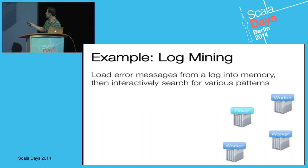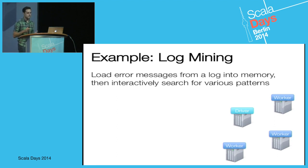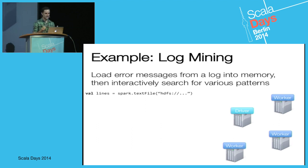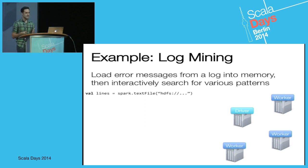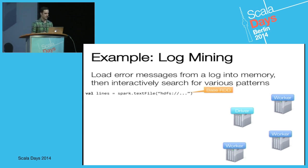We've got a cluster with a driver node, where your Spark program actually runs and controls the computation, and worker nodes where the data is stored and computation is processed. We start by creating our initial RDD using the Spark context — calling the text file method, which takes a directory of text files. We're loading it off of HDFS, but you can also load from S3 or another parallel file system. This returns a collection where each line is an element — this is going to be our base RDD.